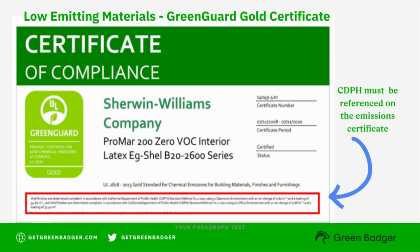CDPH certificates are provided by a number of organizations. UL GreenGuard Gold is one of the most common certificates, shown here for a Sherwin-Williams product. It shows the manufacturer, the certification period, and a section showing the product has been tested in accordance with the California Department of Public Health 2017 standard. This type of emission certificate is required for any product in any of the eight categories to be considered compliant.